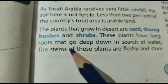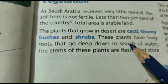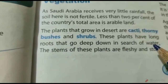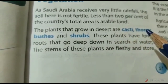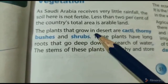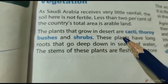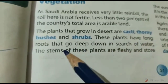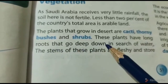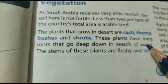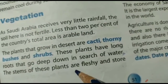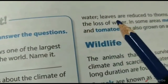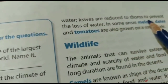These plants have long roots that go deep down in search of water. Desert में cacti means नागफनी, कांटेदार झाड़ियाँ और झाड़ियाँ उगती हैं। इन पौधों की जड़ें लंबी होती हैं जिससे कि वो पानी की तलाश में बहुत गहरी हो जाती हैं। The stems of these plants are fleshy and store water; leaves are reduced to thorns to prevent the loss of water.